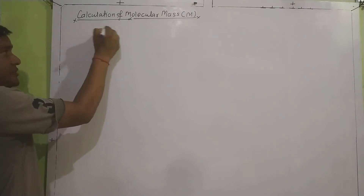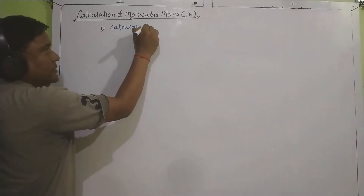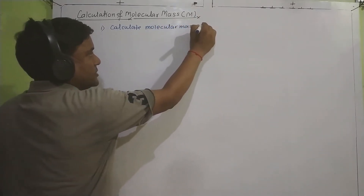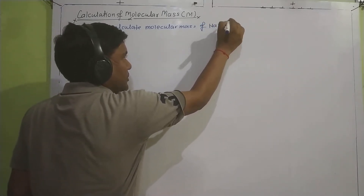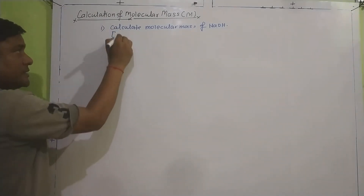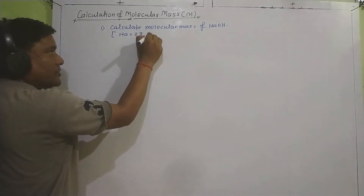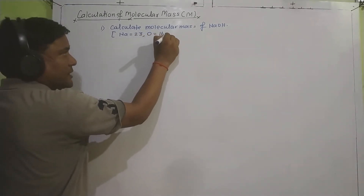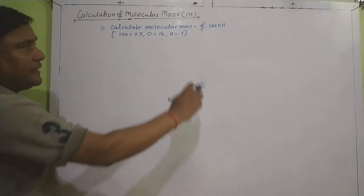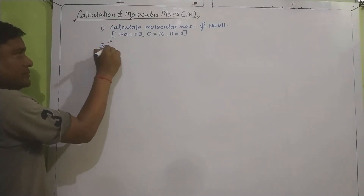Let's take a question: calculate the molecular mass of NaOH. For your reference, the mass of sodium is given as 23, the mass of oxygen is given as 16, and the mass of hydrogen is given as 1. With the help of this data, we have to calculate the molecular mass of sodium hydroxide.